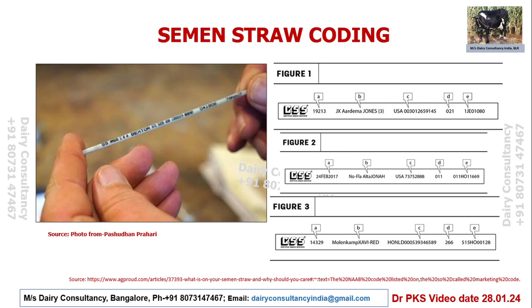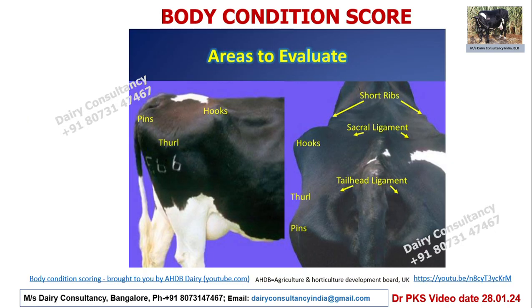If the straw is not available because the inseminator must deposit it with the department, no problem — take a picture of it and keep that. The other thing we are going to discuss is the body condition score.